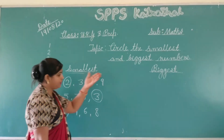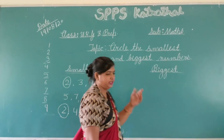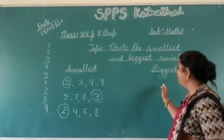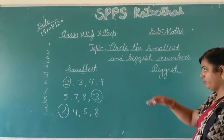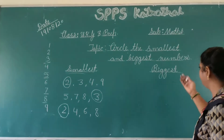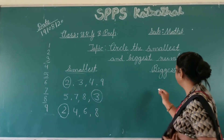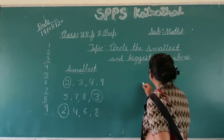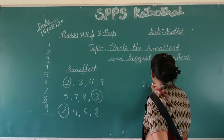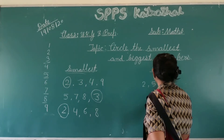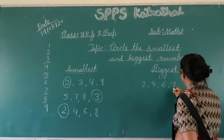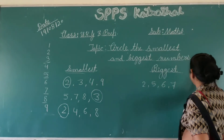Now, let us see the biggest number. What do we see? Biggest means big. We have seen the small number. We have seen the big number.